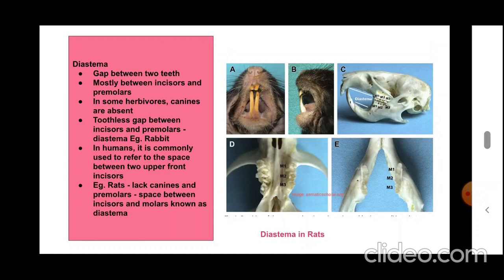Diastema is the gap between two teeth. It is mostly seen between incisors and premolars in many organisms. In some herbivores, canines are absent, creating a gap between incisors and premolars — for example, rabbits have no canines but have premolars and molars. In humans, diastema commonly refers to the space between the two upper front incisors. In rats, which lack canines as well as premolars, there is a space between incisors and molars.